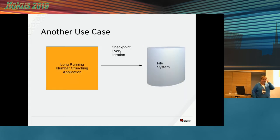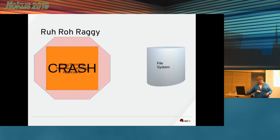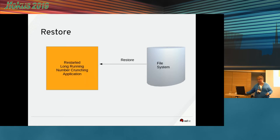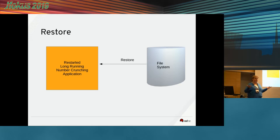Another use case — this was the obvious one to me. If you have a long-running number-crunching application, you can write it out to the file system every iteration. And then if something bad happens, like a crash, you can restore the last checkpoint and keep going. This is a classic use for checkpointing. This is what the supercomputer guys do, and I imagine there are Java programmers running weather simulations and things like that who would find it useful.